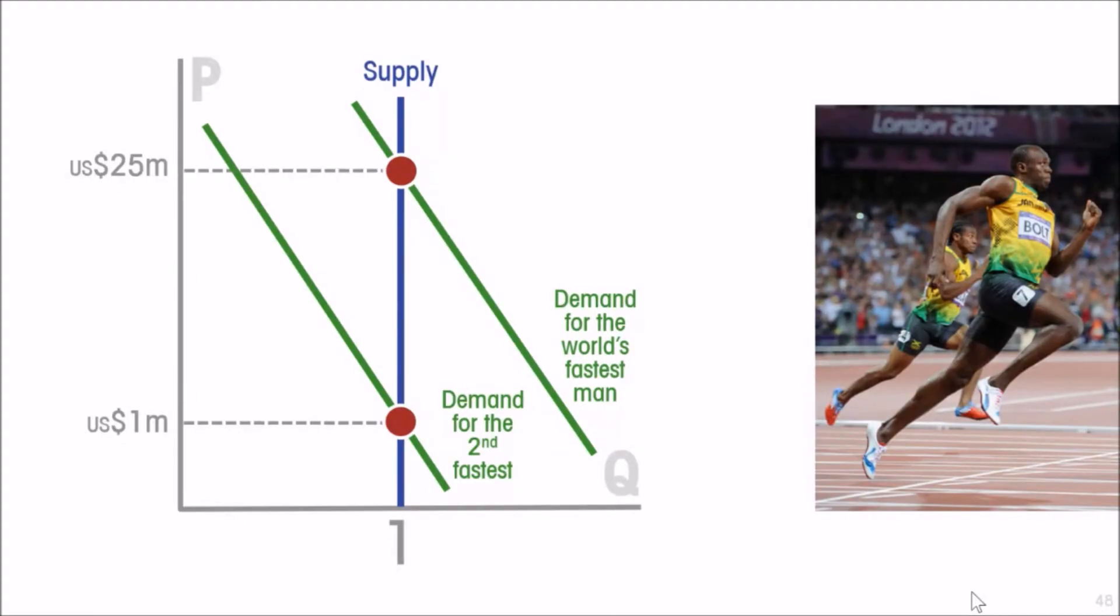You know, 25 times as many people, at least, want to see the fastest man in the flesh as want to see the second fastest man. So we have explained that paradox.